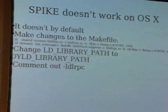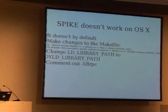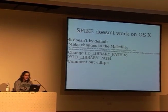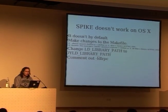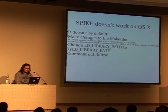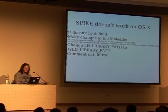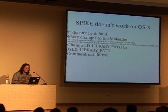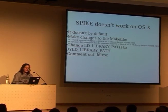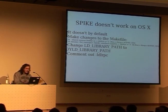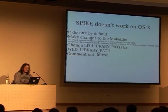Spike by default does not work on macOS. I came to the conclusion that most of the code works on macOS since it was initially written for Linux. The only things you have to change if you want it to work on macOS are some linker arguments, change LD_LIBRARY_PATH to DYLD_LIBRARY_PATH, and add -lrpc. Then Spike just compiles on macOS and you're not restricted to using Linux.